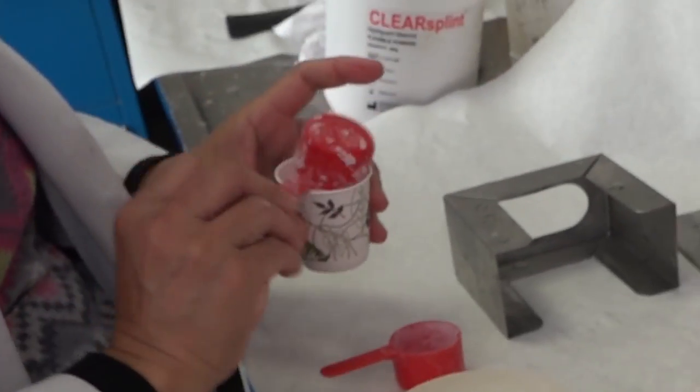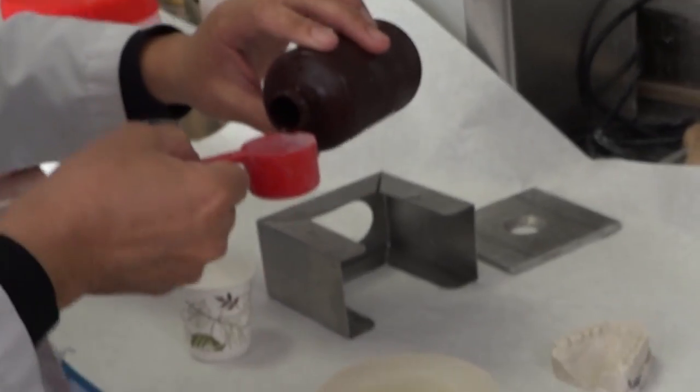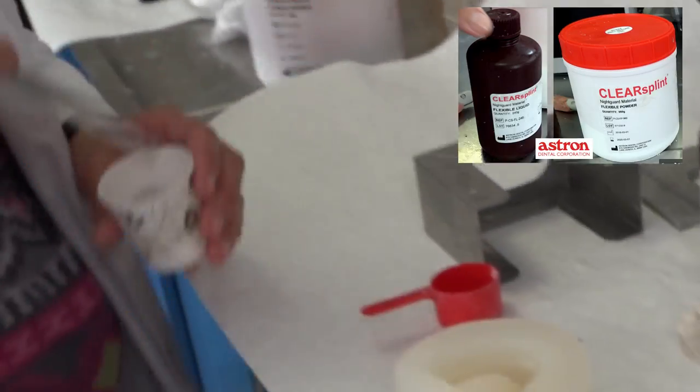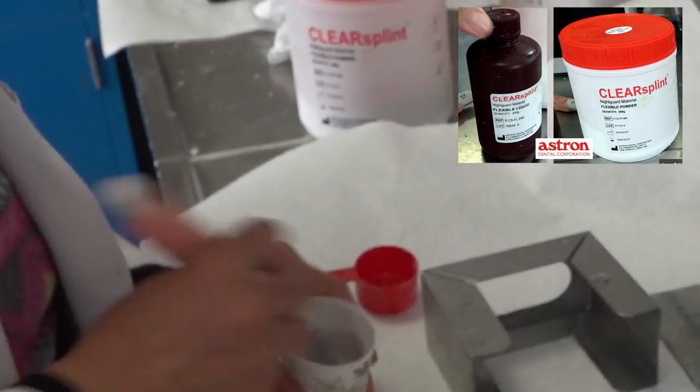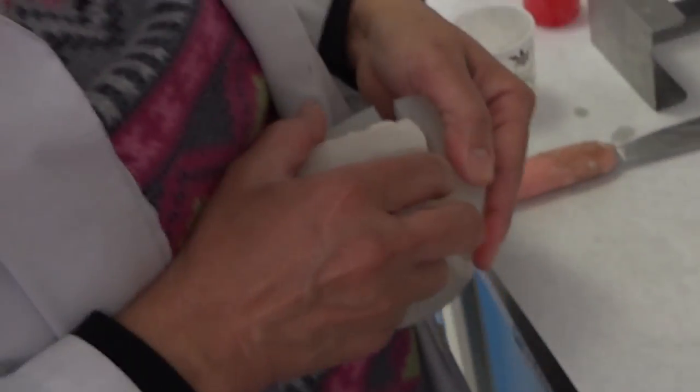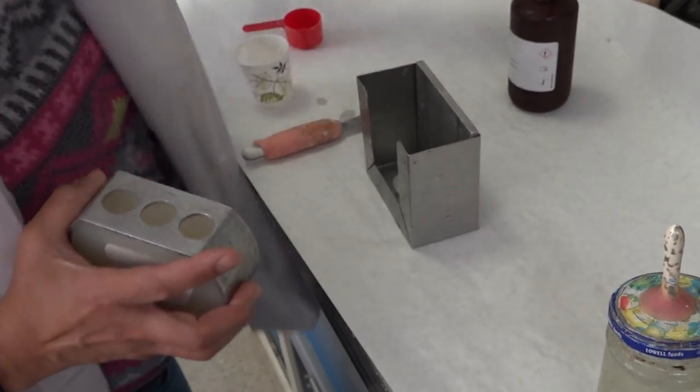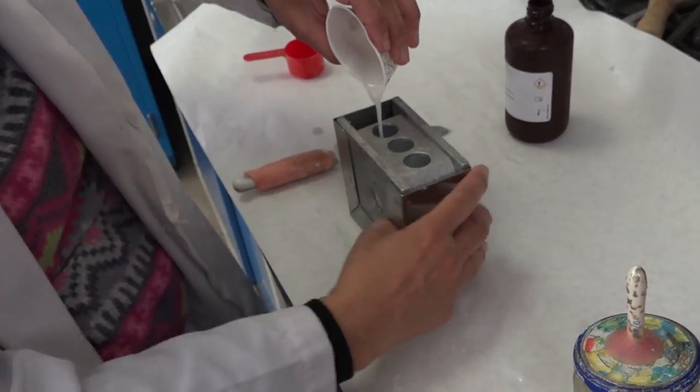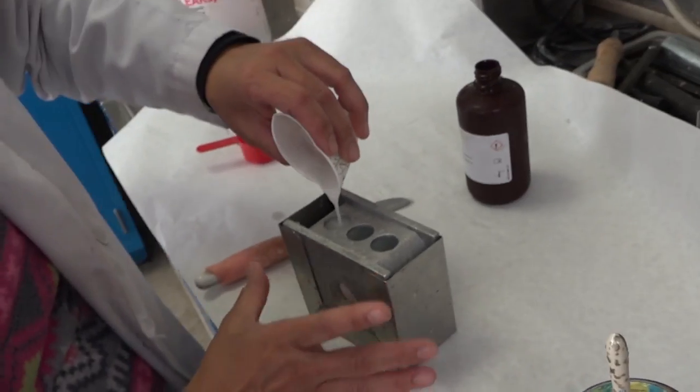Mix clear splint powder and liquid. Place model back into mold and mold back into frame. Pour clear splint into hole until it appears on the other side.